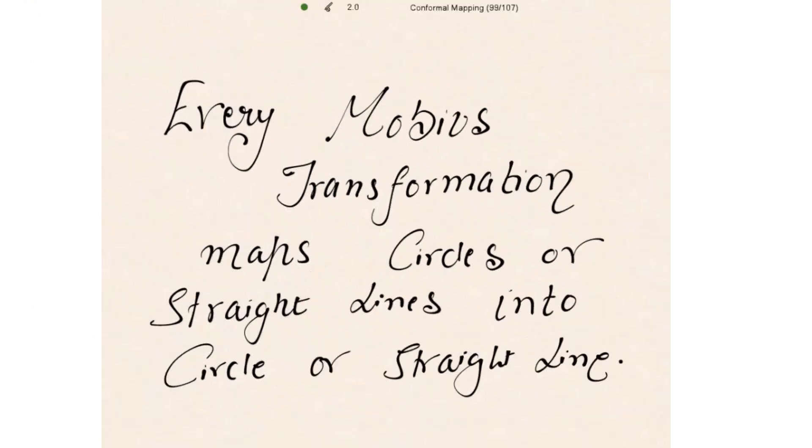This is the theorem for the bilinear transformation. Every Möbius transformation — Möbius, that is a bilinear transformation — maps circles or straight lines into a circle or straight line.